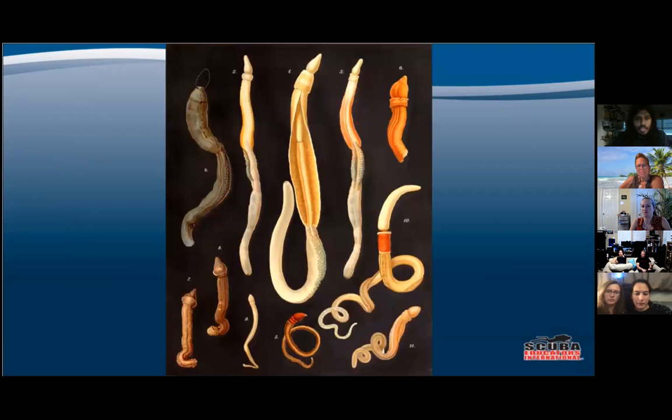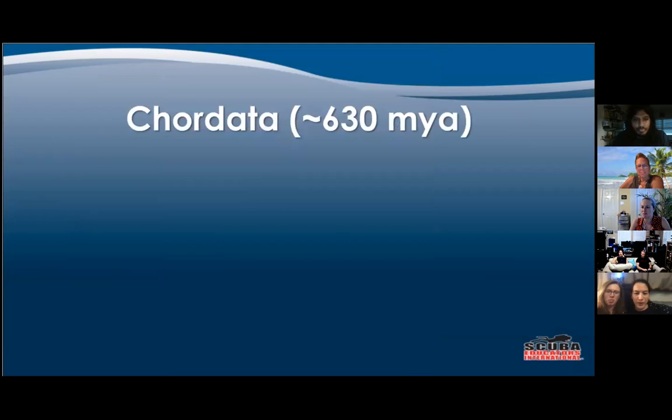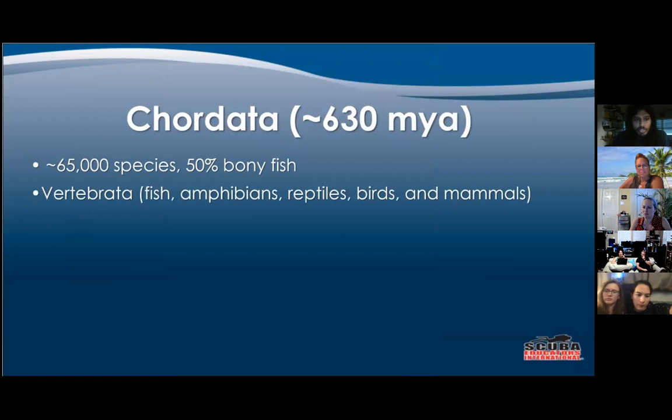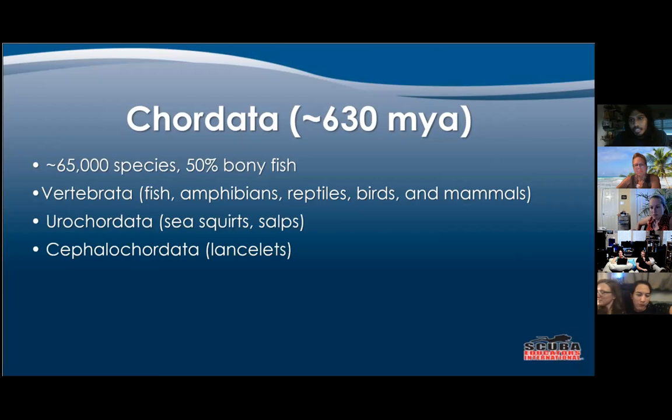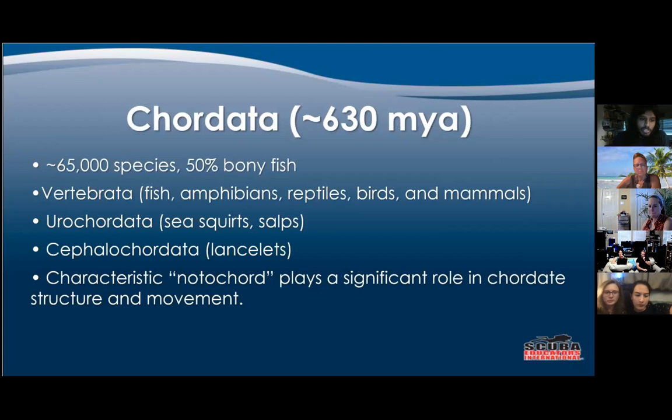And finally the acorn worms, which are often sedimentary. Then we have Chordata, which is what most people think of when we think of animals — 65,000 species, 50% of which are bony fish. You have Vertebrata, which are fish, amphibians, reptiles, birds, and mammals; Urochordata, which are sea squirts and salps; and Cephalochordata, which are lancelets. They have a characteristic notochord which plays a significant role in chordate structure and movement.